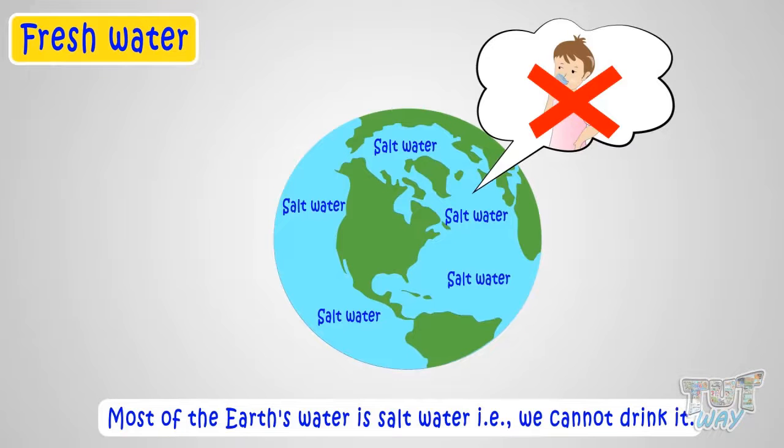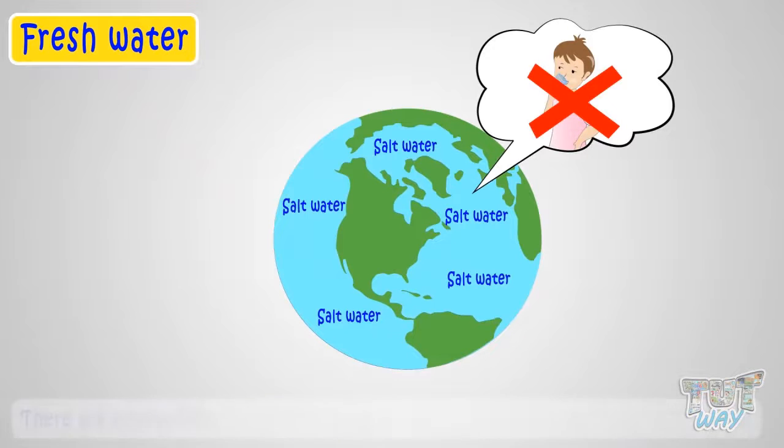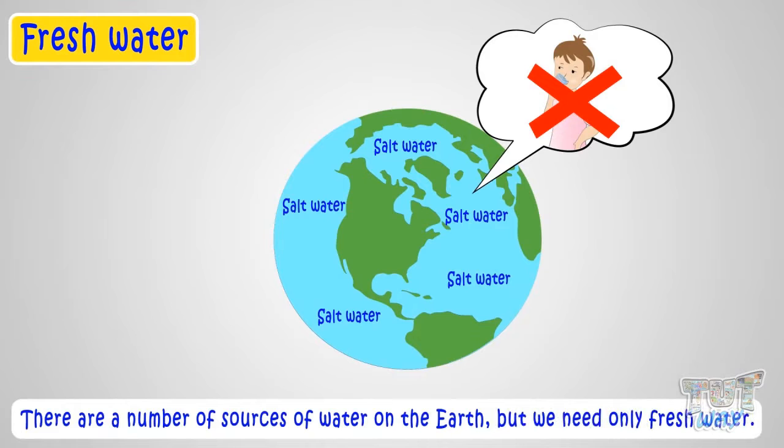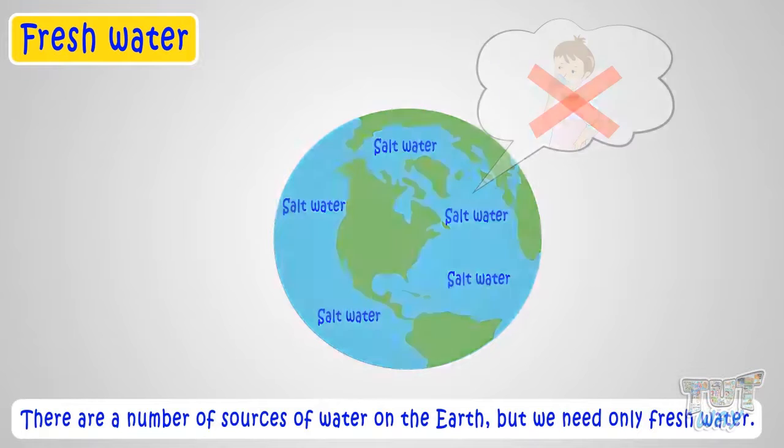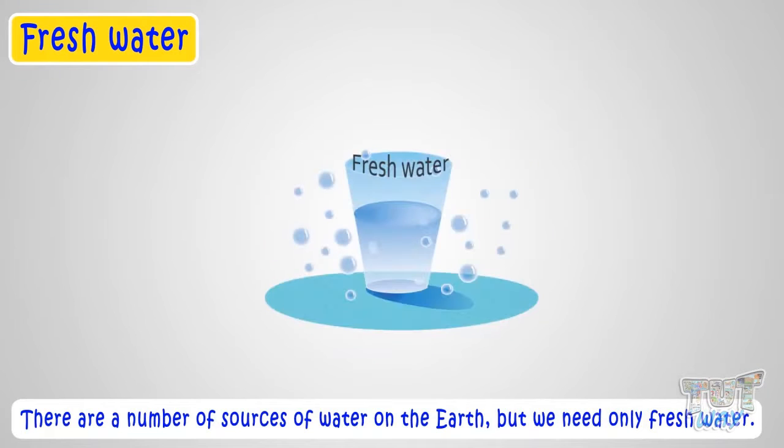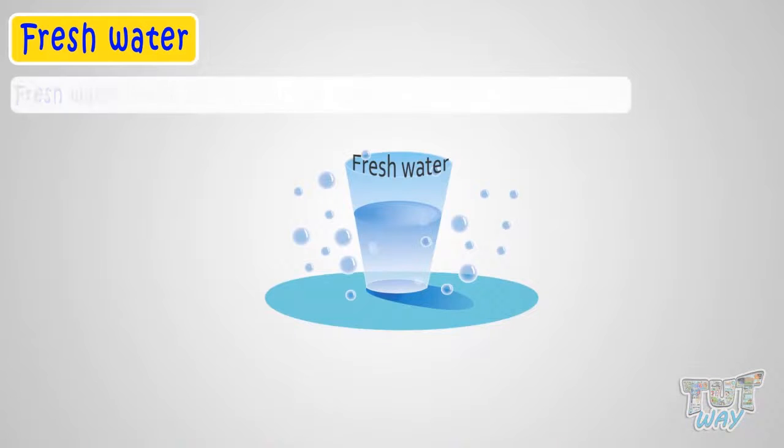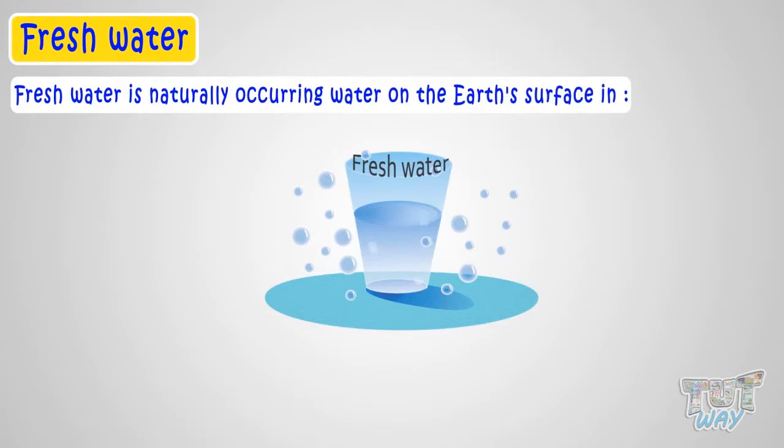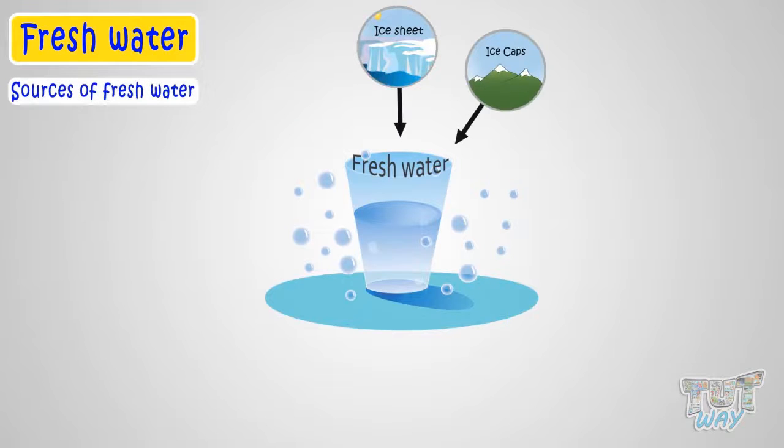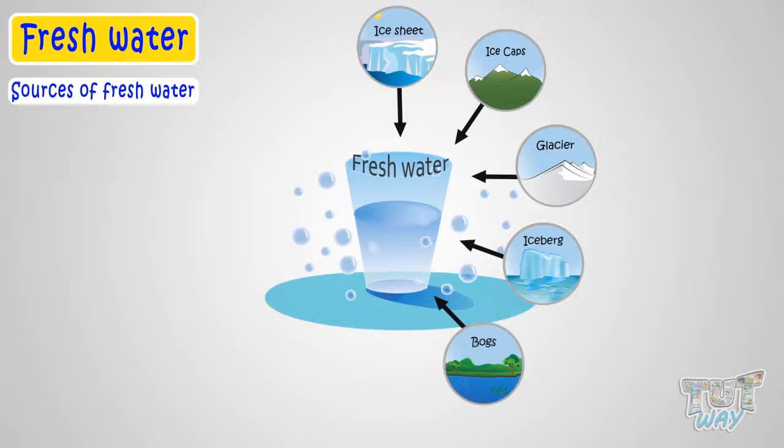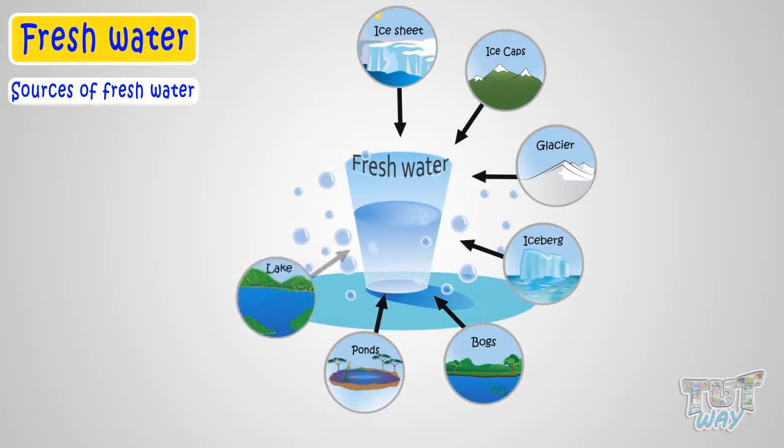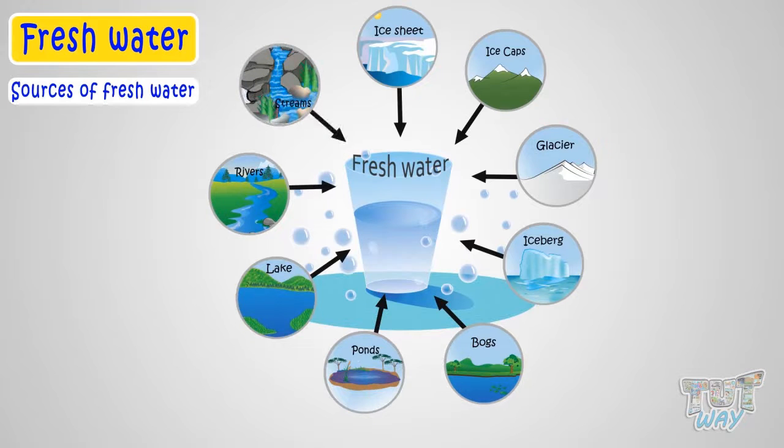So, there are a number of sources of water on earth, but we need only fresh water. And fresh water is naturally occurring water on earth's surface in ice sheets, ice caps, glaciers, icebergs, bogs, ponds, lakes, rivers, and streams. And even underground as groundwater.